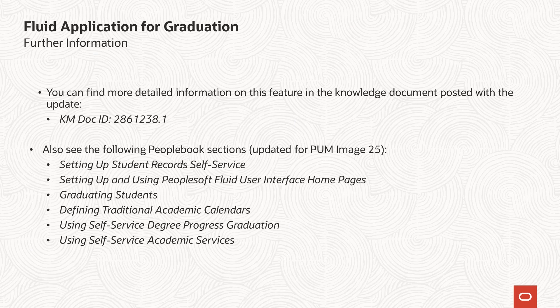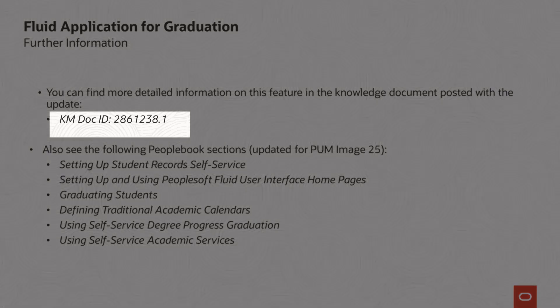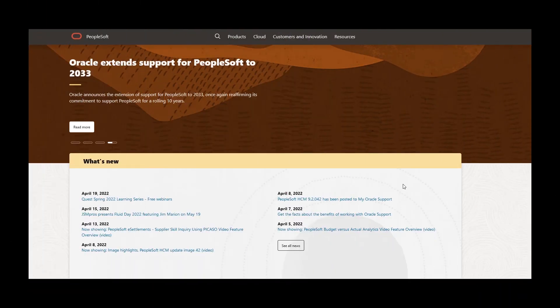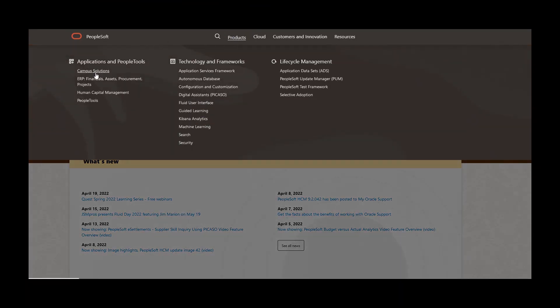That concludes the overview of Fluid Application for Graduation. You can find further information on My Oracle Support Doc ID 2861238.1 and in PeopleBooks. We've only shown you the highlights of the Student Records Fluid Enhancement Apply for Graduation in this PeopleSoft update image. For more information about these features and the other enhancements for all PeopleSoft products, go to the PeopleSoft information portal for updates.